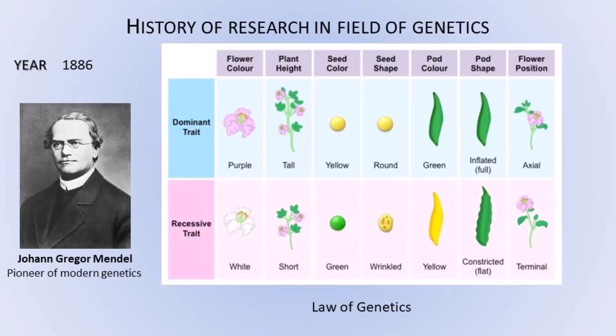Genetics is a branch of science concerned with the study of genes, genetic variation, and heredity. Johann Gregor Mendel is the pioneer of modern genetics. He studied the inheritance of some characteristics of the pea plant and showed that inheritance of these characteristics follows certain principles. Later, these principles became popular by his name and now form the basis of modern genetics.